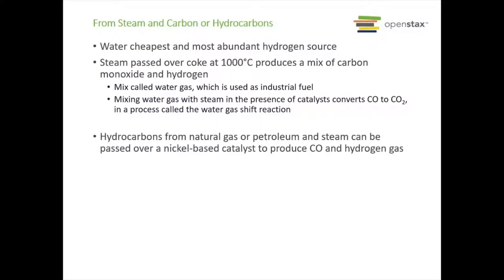The first way is from steam and carbon or hydrocarbons. Water is the cheapest and most abundant source of hydrogen. We make it into steam and pass it over coke — an impure form of carbon — at 1000 degrees Celsius. This gives us a mixture of carbon monoxide and hydrogen gas. We call this mixture water gas, and it is actually used as an industrial fuel.